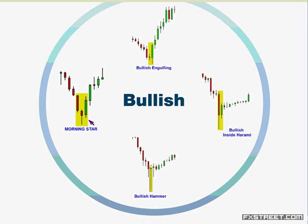I look to dailies, four-hourlies, and then hourly charts. If I get a reversal pattern at a level where I think there should be support or resistance, I can even take it all the way down into five minutes. I used to do timeframe breakdowns, analyzing a currency pair from a weekly all the way down to shorter timeframes to try and trade the waves.